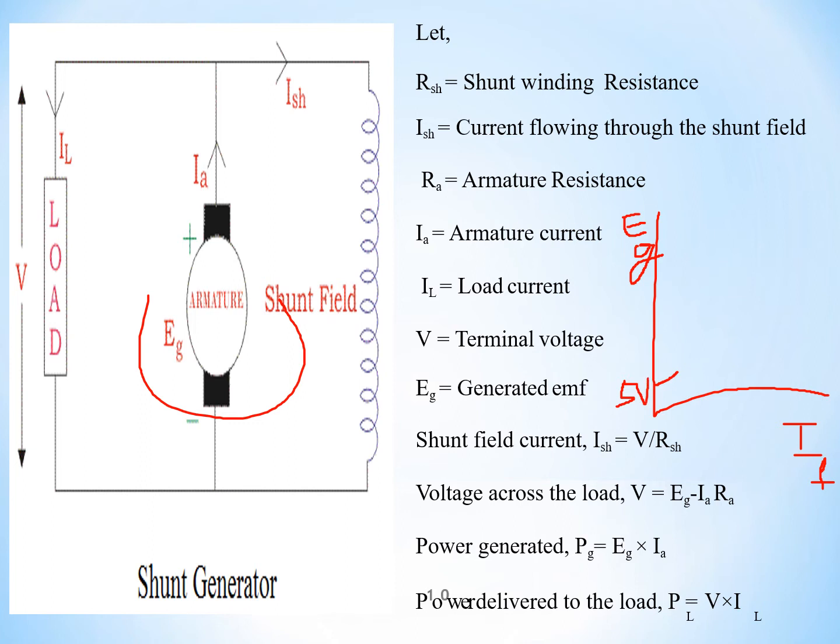So now this 5 volts will produce some IA current. And from this current, some ISH will flow. So once the ISH flows through the shunt field winding, there will be flux generation. So the flux will be produced, which may be a little bit, but this flux will link to the armature conductors. So again, the EMF will be induced. Hence, now the EG before the 5 volts and the EMF generated by the produced flux will accumulate and the EG will be increased.